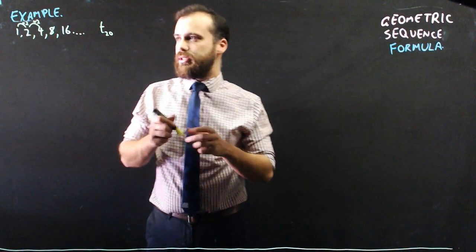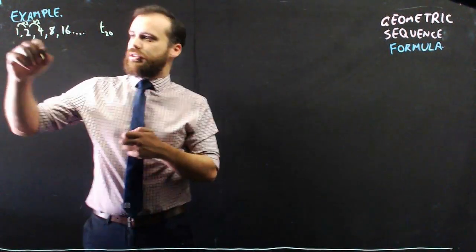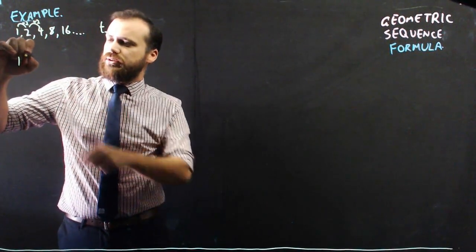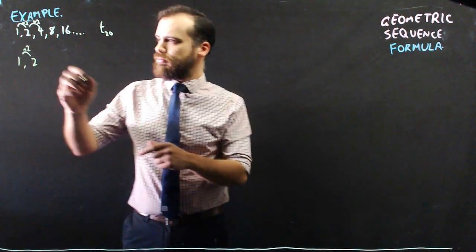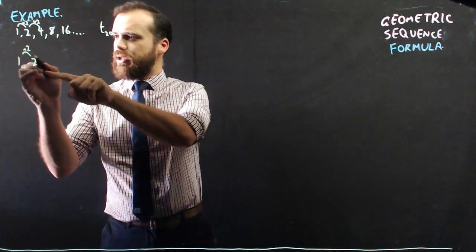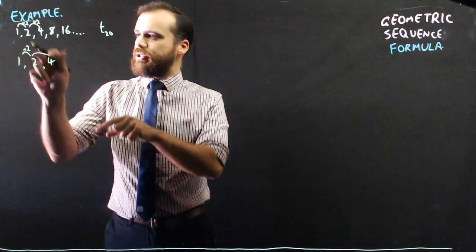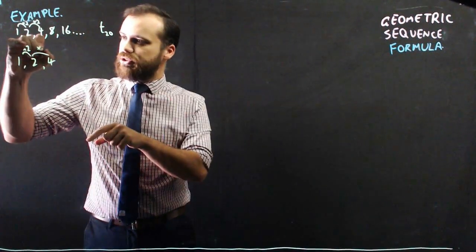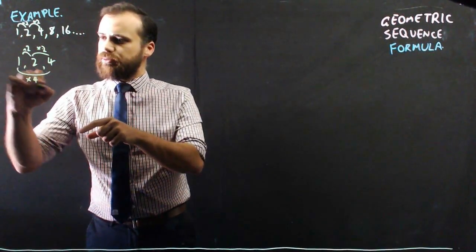Now, the way to do it is to realize that the ratio, so if I want to get from 1 to 2, I'm multiplying by 2. If I want to get from 1 to 4, I'm multiplying by 2, and then I'm multiplying by 2 again, which is the same as multiplying by 4.